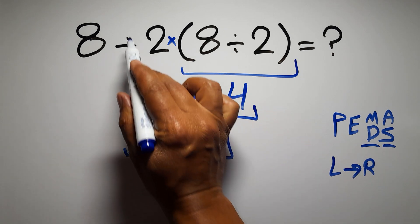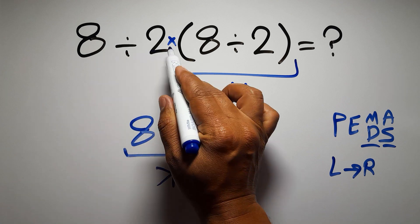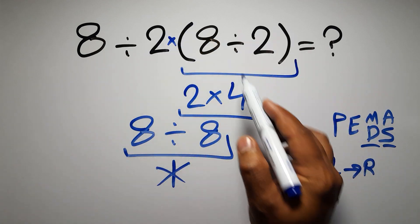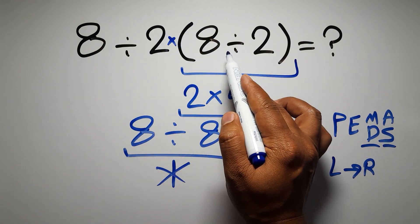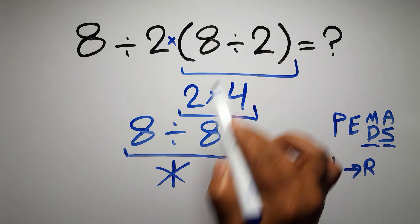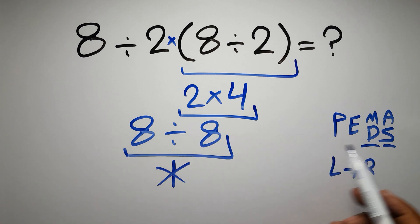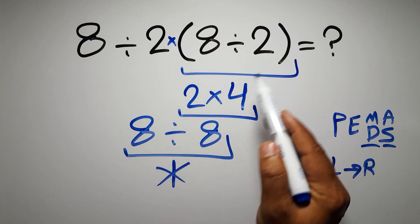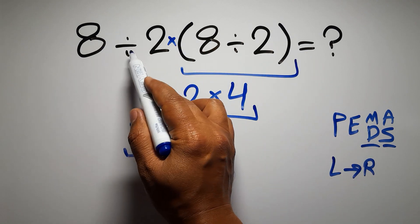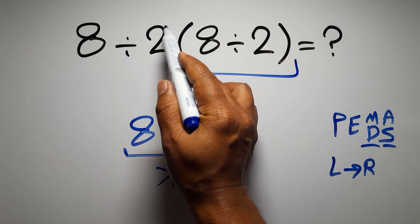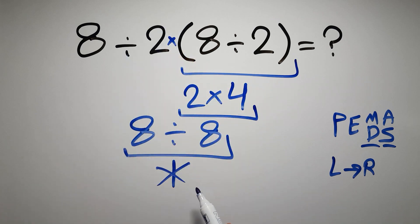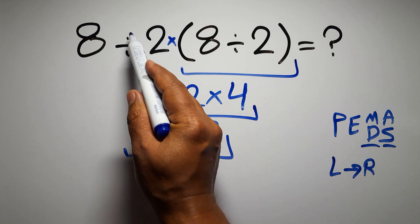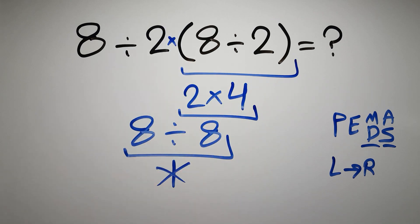Here, we have one division, one multiplication, and one set of parentheses. Inside the parentheses, we have one division. According to PEMDAS, first we have to do this parentheses, then this division, and finally this multiplication. If we do this multiplication before this division, it is wrong.